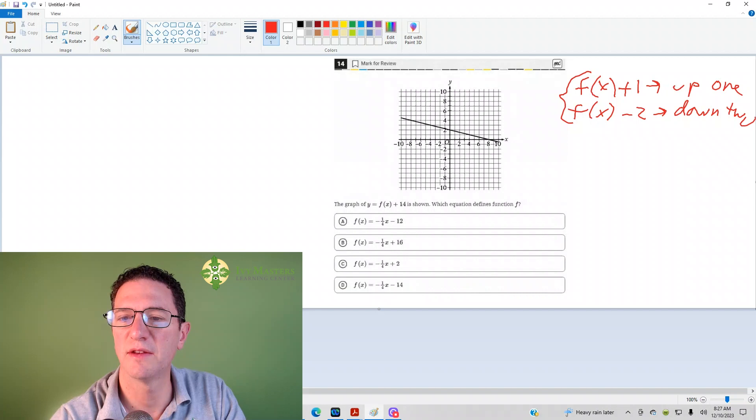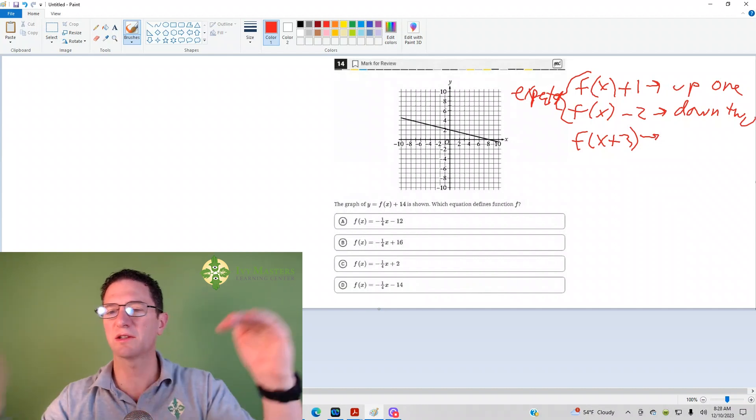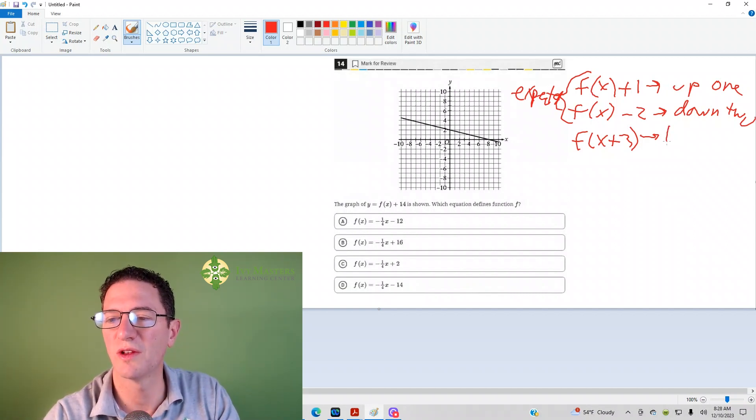We could say that this is x vector. Now, check out what happens when f of x plus 3 is inside the parentheses. Now, you know x goes left to right. It looks like we're manipulating x. So you'd expect it maybe to go to the right, but it doesn't. It goes to the left. So this goes left 3.